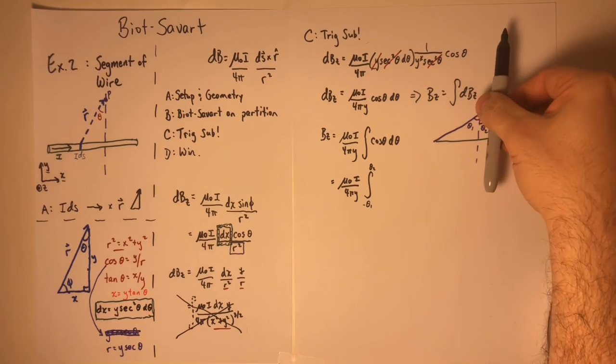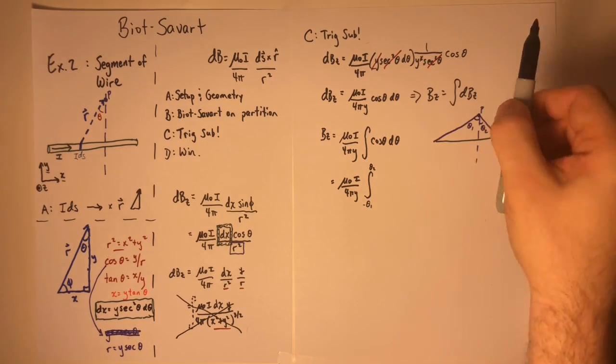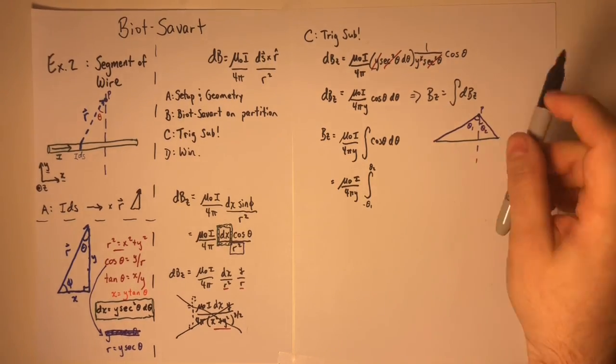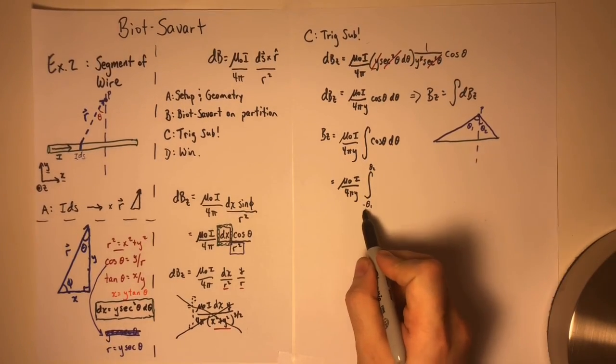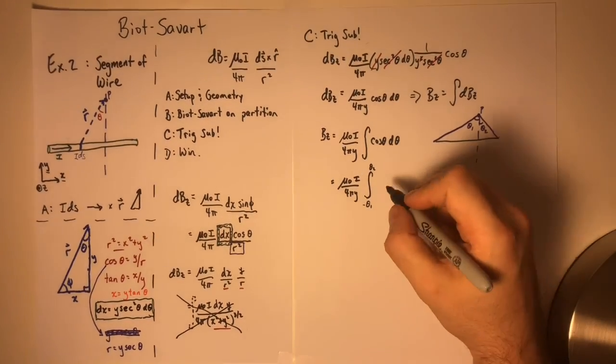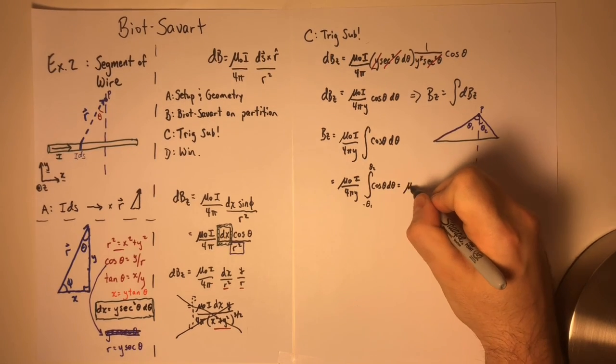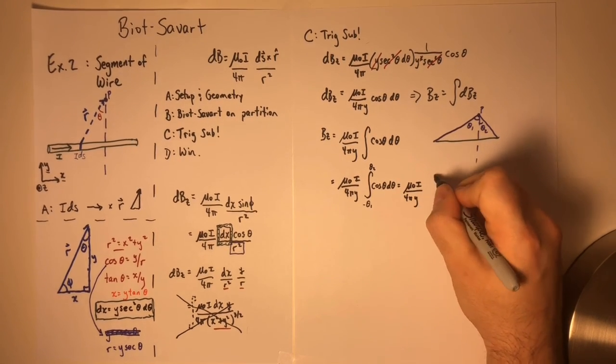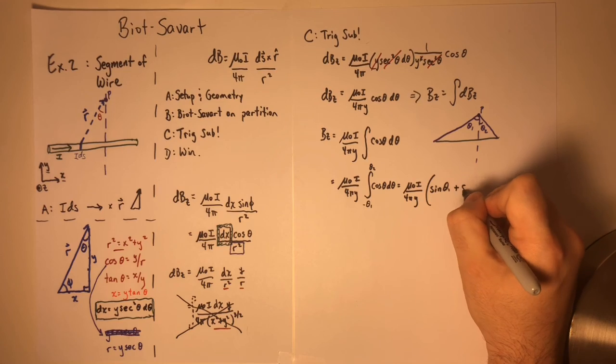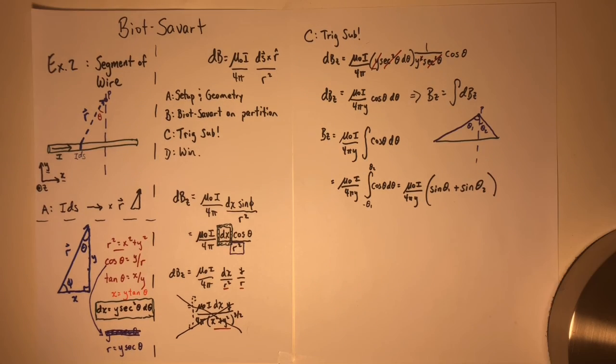Because theta1 sort of opens clockwise from our current elements and theta2 opens counterclockwise, I'm going to call theta1 negative, theta2 positive. And that's our answer.